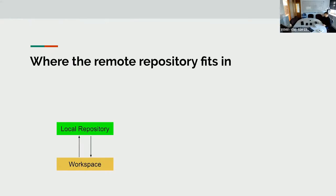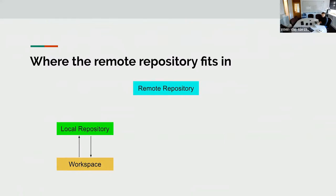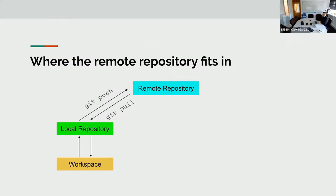If you look at this slideshow, we have the local repository and the workspace, and we use git commit and git add to put something in. If we want to add a remote repository, first we create a remote repository on the cloud, then we link our local repository to the remote repository. Our workspace will not interact with the remote repository directly. When we make changes, we first commit to the local repository, then with git push we push changes to the remote repository, and with pull we can pull changes back.